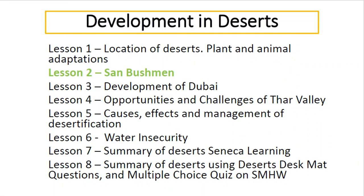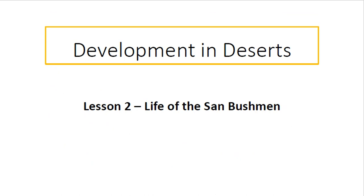Hello everybody. This is a video lesson which talks about development in deserts. You'll know from our first lesson last week, we did about the location of deserts and we looked at how plants and animals adapt to those difficult, dry, hostile conditions. Now it isn't just plants and animals that need to adapt, it is also people. Many people live in desert environments around the world and the group we're going to be looking at in today's lesson is a group called the San Bushmen. So the first thing for you to do in your exercise books is to put the title: Development in Deserts, Lesson 2, Life of the San Bushmen.